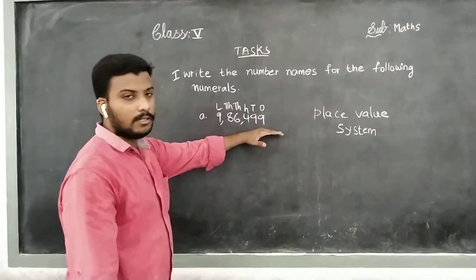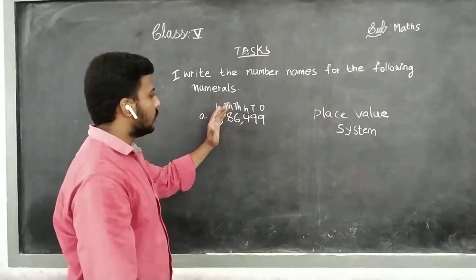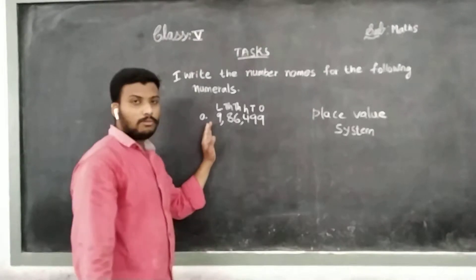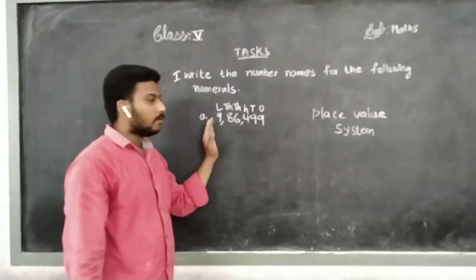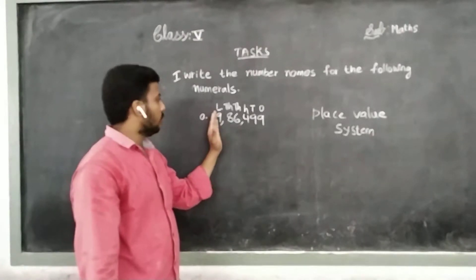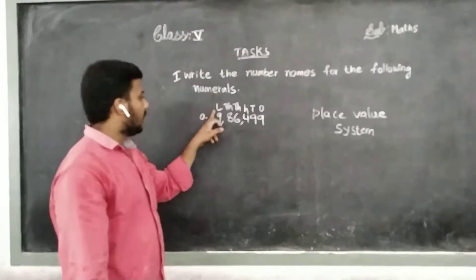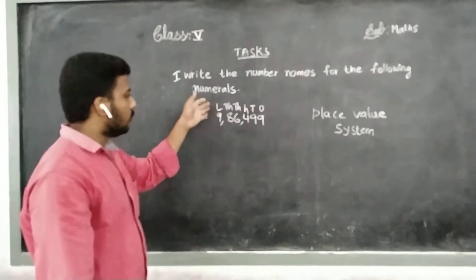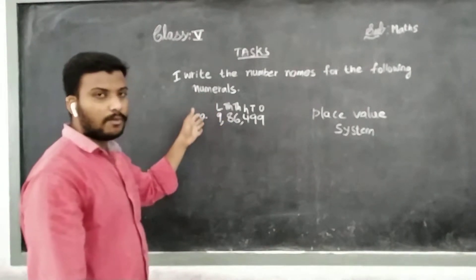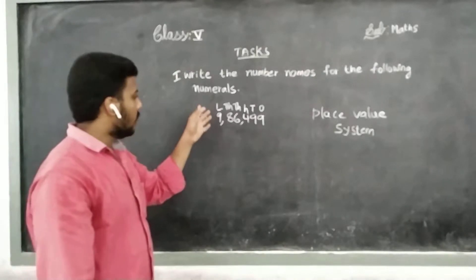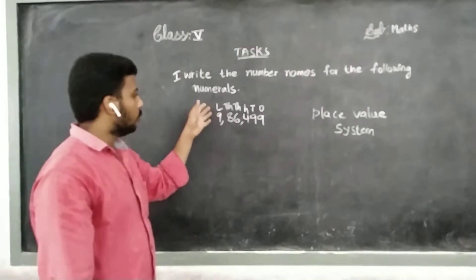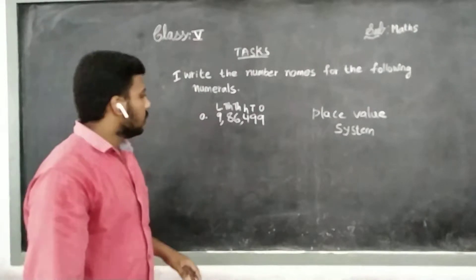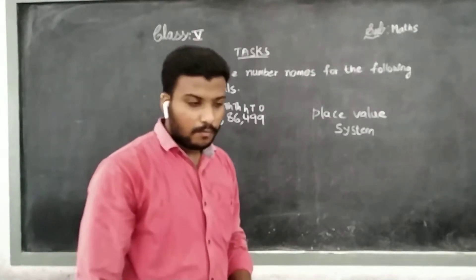Right now we have to identify the place value system and convert. We have to write from the biggest value, which means lakhs. We have to start from the lakhs. If there is a bigger place, then we have to start from there. Where is the biggest place value? We have to start from there itself.